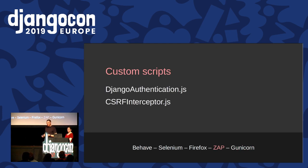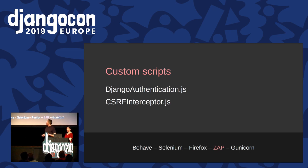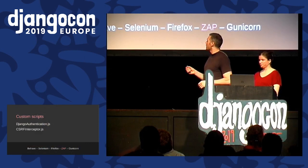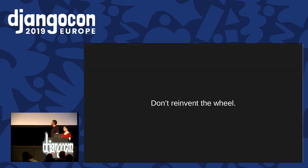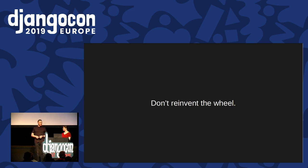ZAP is not built specifically for Django or any framework. That means to use it with Django, we need to tune it a little bit with a couple of customisation scripts - we've written these and saved them into the Django Goat project. There are essentially two things we need to customise: one is the way ZAP handles authentication, so the first script does that for Django. The second is the way it handles CSRF and interaction with forms. We don't have time to go into exactly how those scripts work, but they're in the Django Goat project for you to look at. You don't need to reinvent the wheel to bring ZAP into your projects - we've distilled down everything we've learned into the Django Goat test suite, and it's there on GitHub for you to use as a template.